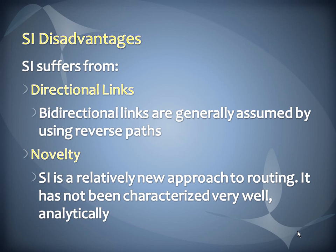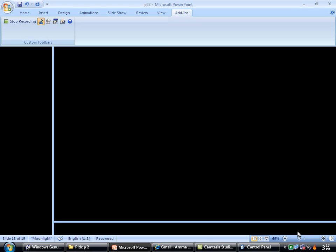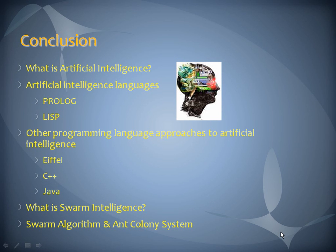One disadvantage is directional links — bi-directional links are generally assumed by using reverse paths. The next disadvantage is that swarm intelligence is a relatively new approach to routing, and it has not been characterized very well.